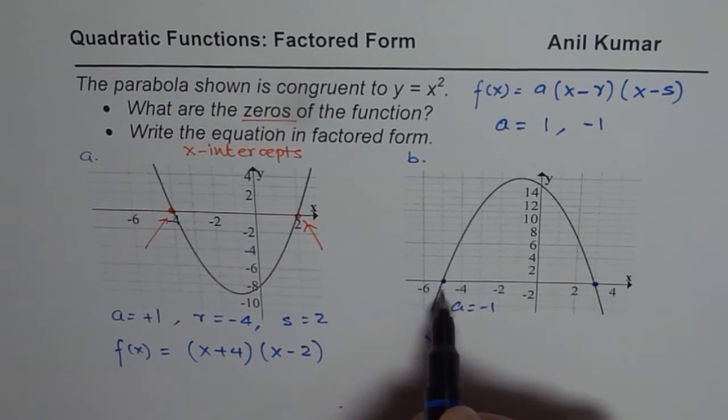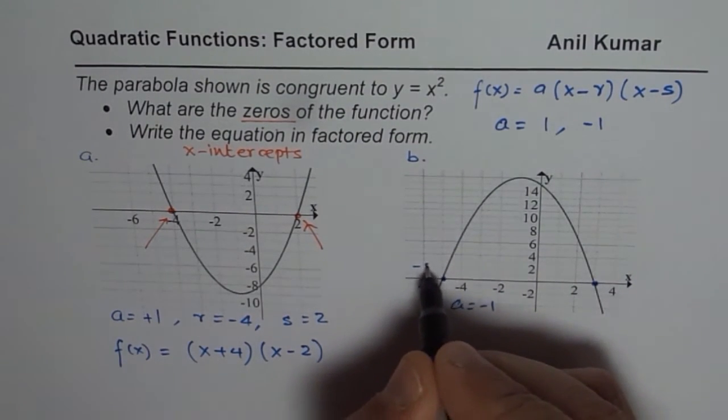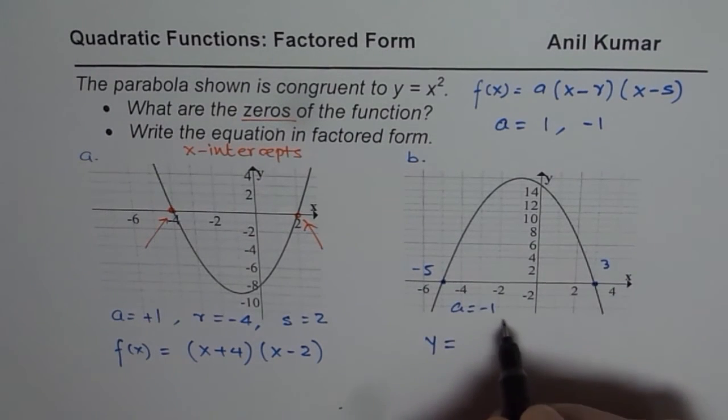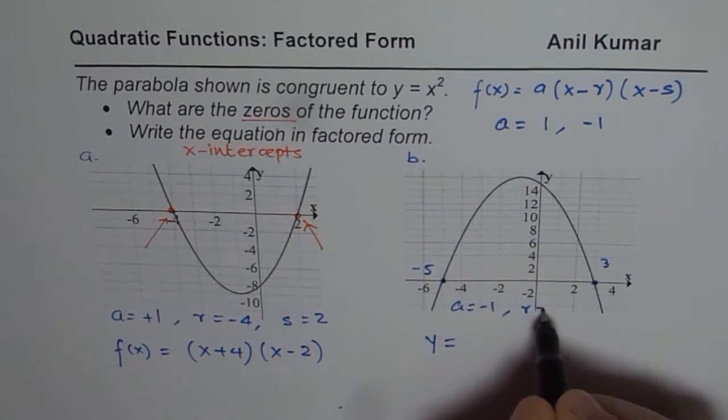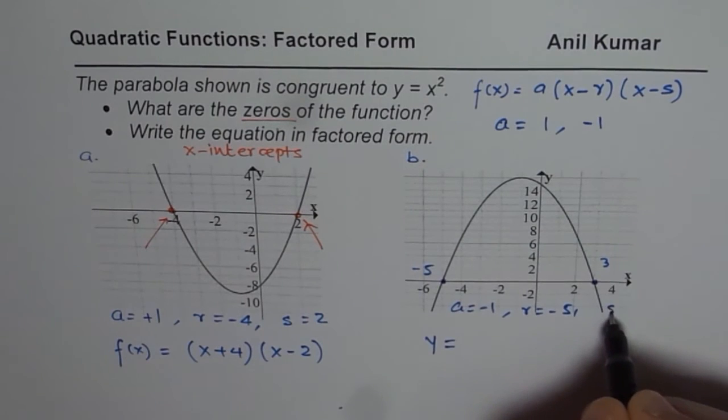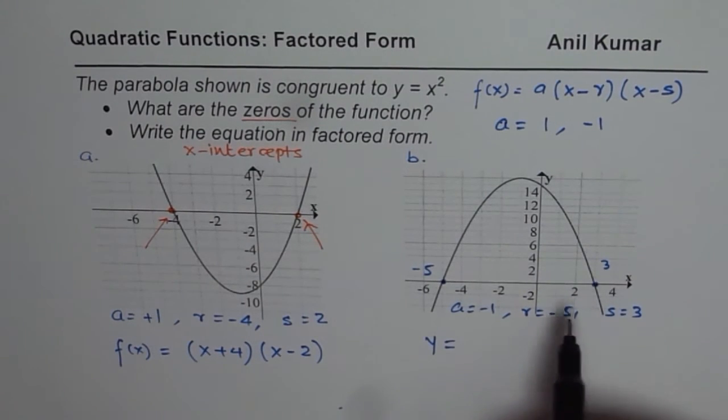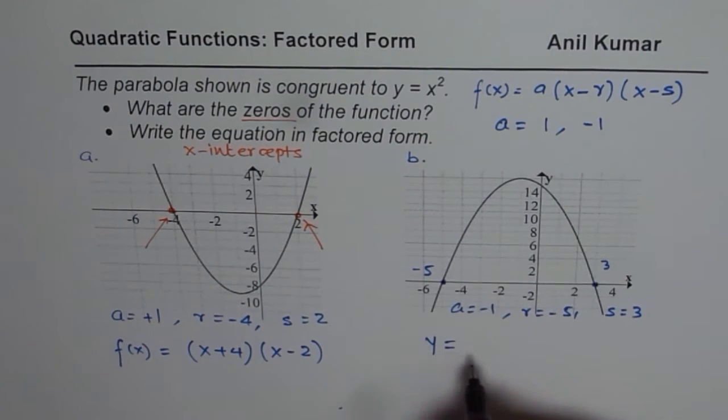So this one is at minus 5. The other one is at 3. So we can say, well, R is minus 5, S equals 3. When we substitute these values in our equation, what do we get?